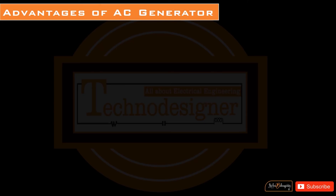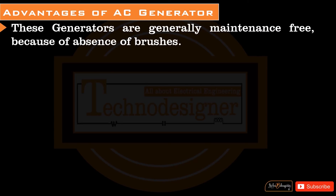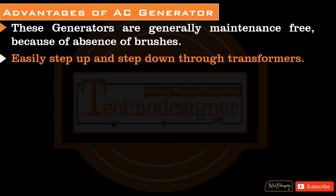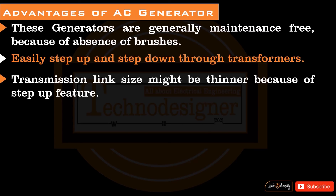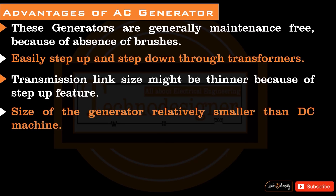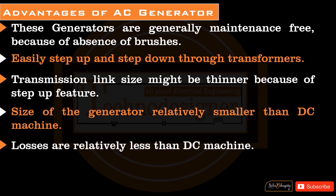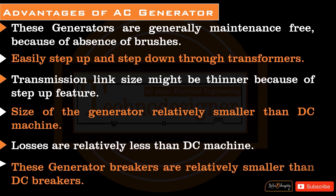Advantages of AC generators: These generators are generally maintenance free because of the absence of brushes. They can easily step up and step down through transformers. Transmission link size may be thinner because of the step-up feature. The size of the generator is relatively smaller than a DC machine. Losses are relatively less than a DC machine, and generator breakers are relatively smaller than DC breakers.